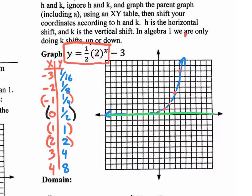The asymptote used to be at y equals 0. Where's your new asymptote going to be if you shift the whole thing down 3? It's going to be at negative 3. So I go to negative 1, negative 2, negative 3 and put the line right there. I need to take every single one of these coordinates and move them down 3 units. So I take each coordinate and move it down 1, 2, 3 and put a new dot. That's the whole graph shifted down 3 units — because the k value is minus 3. If it had said plus 3, we would have shifted it up 3 units.